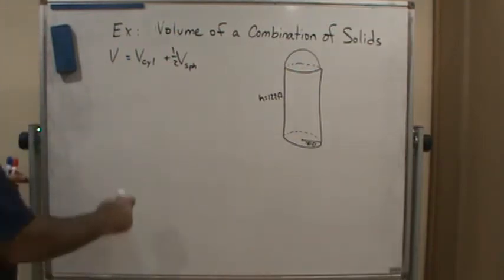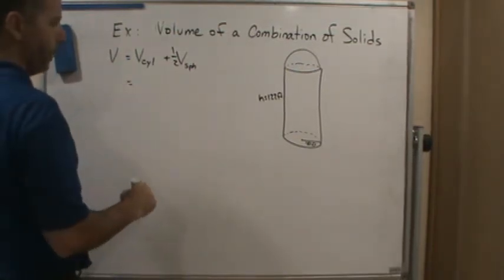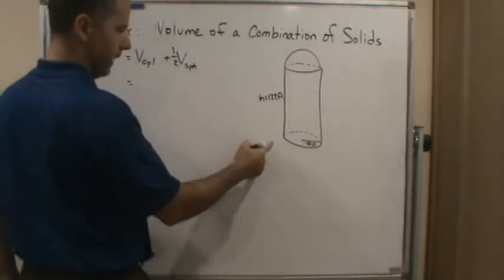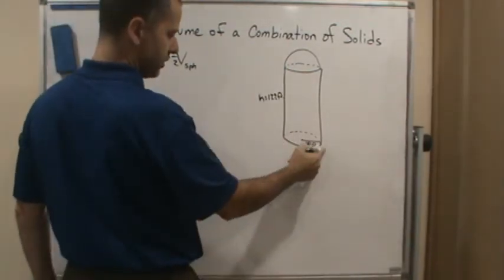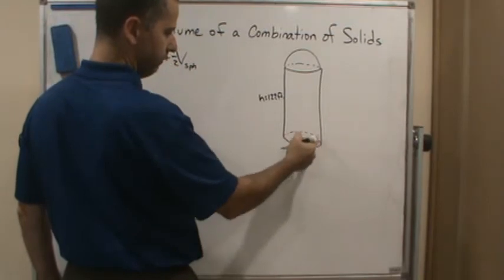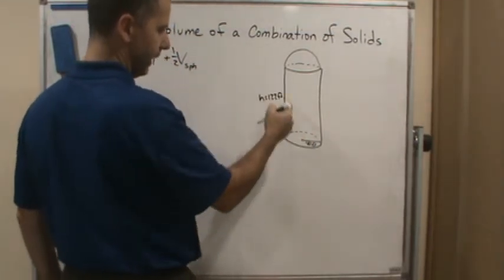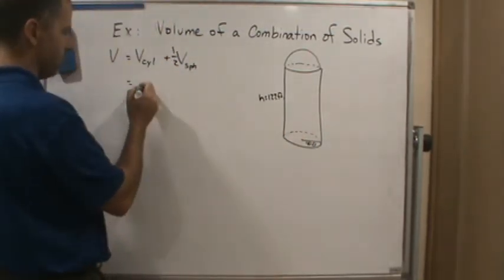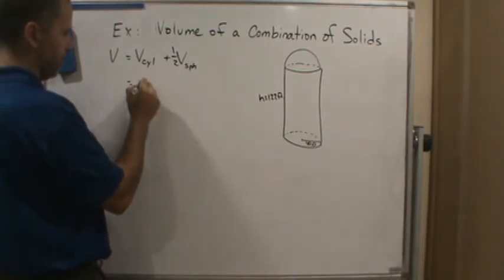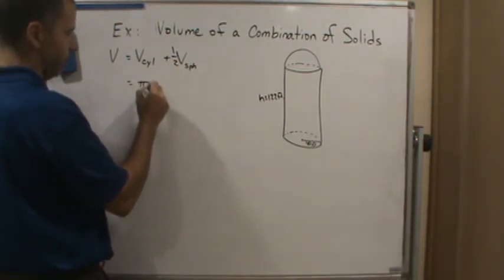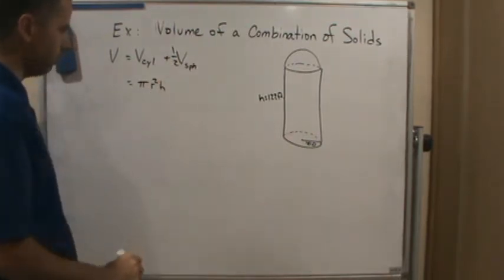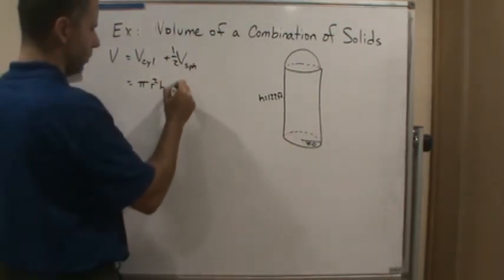So what's the volume of a cylinder? Well, a cylinder has a height and a circular base. So it's going to be the area of the base times the height. Well, it's a circular base.